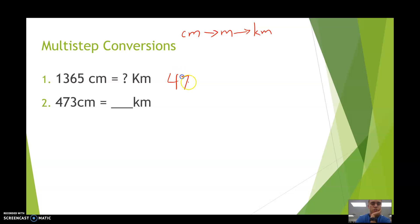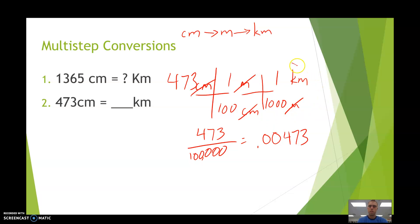So here we go. 473 centimeters. We're going to go centimeters into meters. We're going to go meters into kilometers. And then we fill in our numbers. 1 meter, 100 centimeters. 1 kilometer, 1,000 meters. So we have 473 divided by 100,000 again. And we should have 0.00473. Let me just double check my math and my calculator. 473 divided by 100,000, and 0.00473. Now my units, centimeters cancels, meters cancels, kilometers is what remains. Hopefully you get 0.00473.